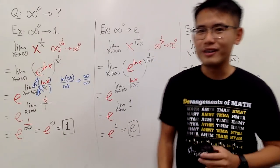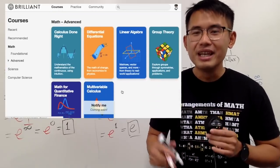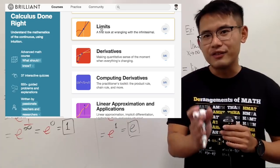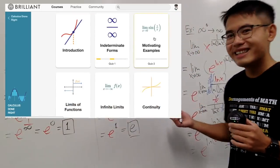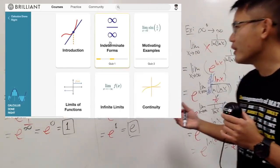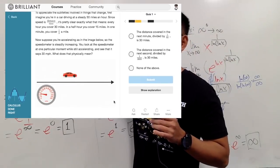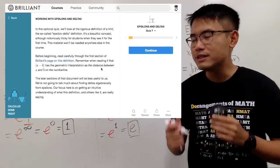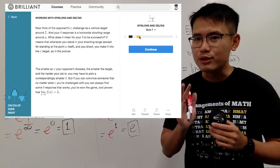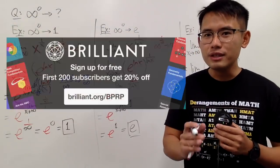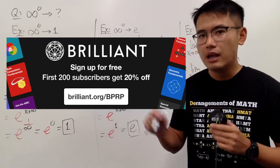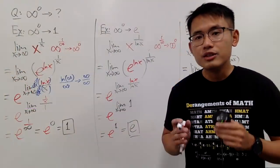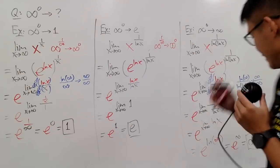Before we go, I want to tell you more about Brilliant.org — a wonderful place to learn how to solve interesting and challenging math questions. They have new problems of the week every week, ranging from basic to advanced. A lot of people have the misconception that anything to a zero's power is one, but that's not the case in limit situations. Brilliant can help you study these details so you learn math the right way. Use the link brilliant.org/bprp to get 20% off your annual premium subscription. Thank you so much for watching — that's it!